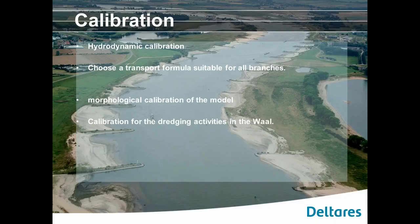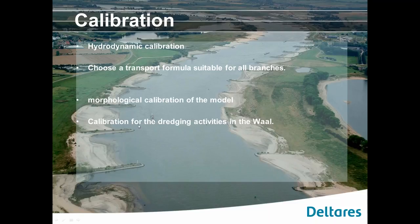After the model was constructed and needed functionality was added, we started with model calibration. We typically start with the hydrodynamic calibration. A key question when doing morphology is which sediment transport formula to use — this depends on your knowledge of the river and analysis of available formulas. After choosing the transport formula, you start with a morphological calibration. In the Rhine case, we have an additional step: calibration for dredging activities. We want to be able to correctly predict the yearly dredged volumes that have been done historically.